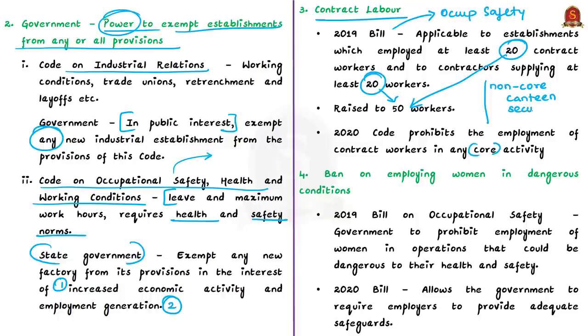Fourthly, the 2019 bill on occupational safety, health and working conditions allowed the government to prohibit employment of women in undertaking operations that could be dangerous to their health and safety. But as a welcome step, the 2020 bill removes this power to prohibit employment. Instead, it allows the government to require employers to provide adequate safeguards for women. So instead of putting a ban on employing women, the new code provides for providing safeguards.